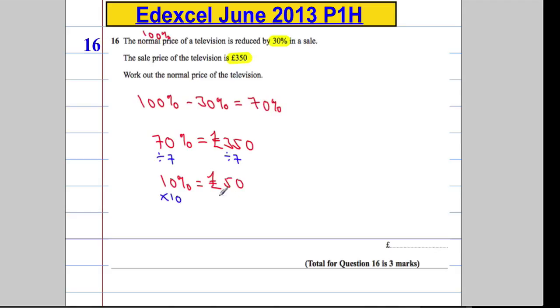But times both sides by 10, we're going to get 100%. That means 100% of the price, or the original price if you will, has got to be £500.